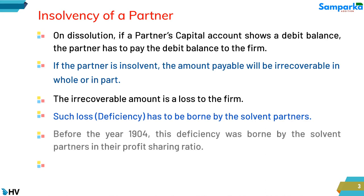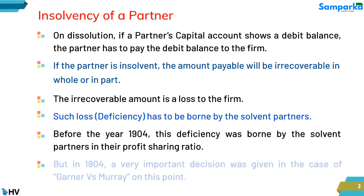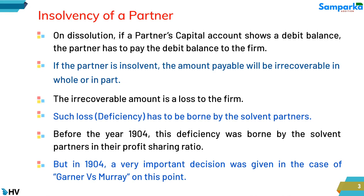Before the year 1904, this deficiency was borne by the solvent partners in their profit-sharing ratio. But in 1904, a very important decision was given in the case of Garner vs. Murray on this point.